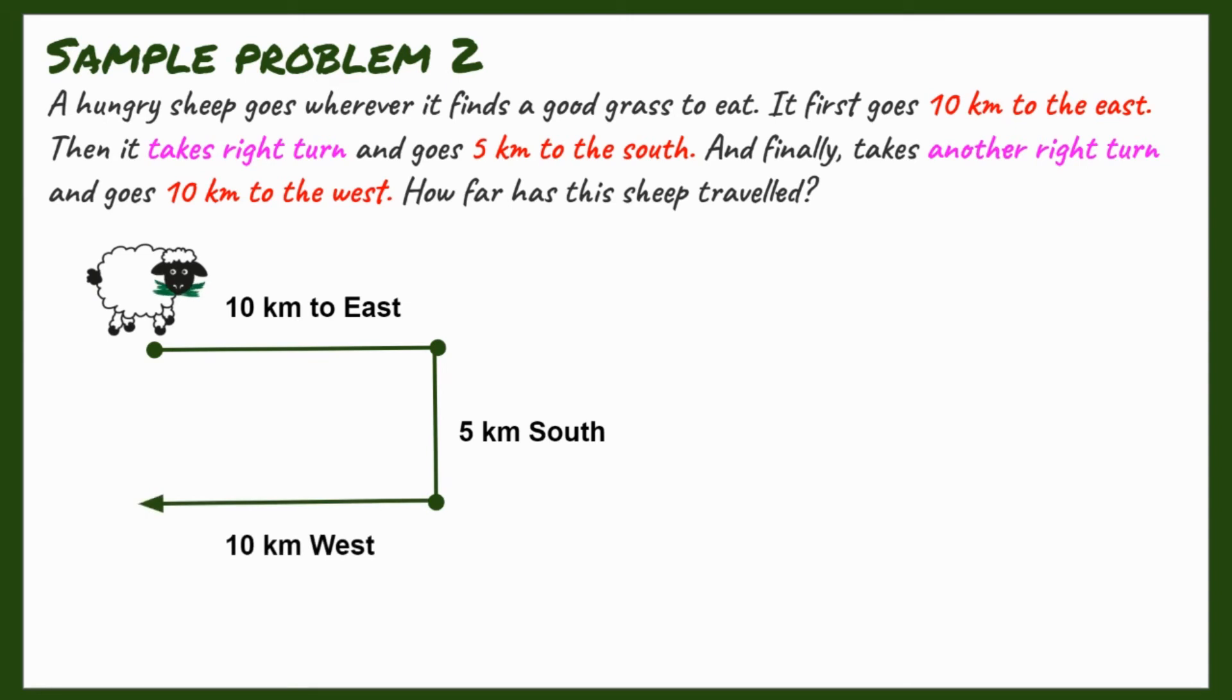How far has this sheep traveled? Now, let's try to answer this together. In this question, you can actually get two valid answers: the distance and the displacement. The total distance traveled, which is the total length of its path. In this illustration, the distance traveled is 10 kilometers, 5 kilometers, and 10 kilometers. And this will give you 25 kilometers. So, if that's what we came up with, what we calculated is the total distance traveled by the sheep.